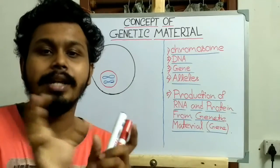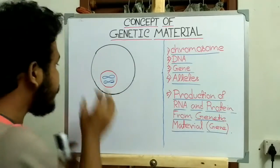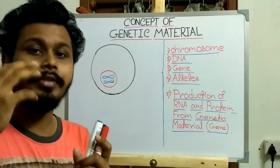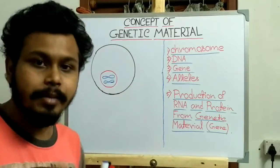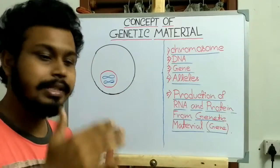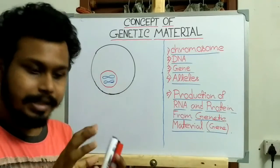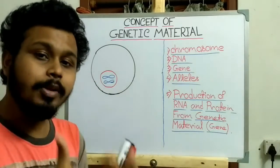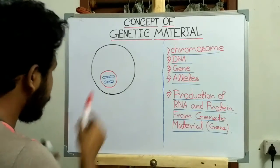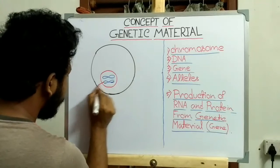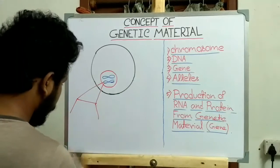Now I come to the DNA, that is the deoxyribonucleic acid. Each chromosome present in the nucleus is composed of DNA, which is known as the genetic material of the cell and is carried from generation to generation. The DNA molecule is present in its double-stranded structure in the chromosome. Now I will elaborate this chromosome part.